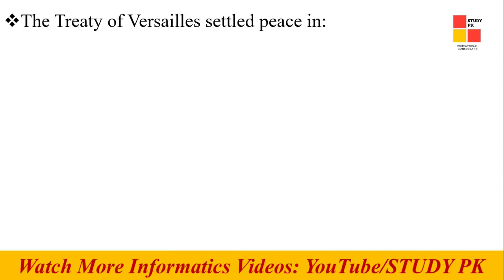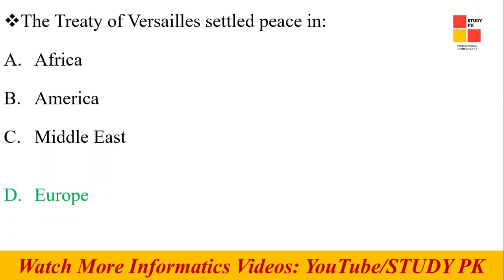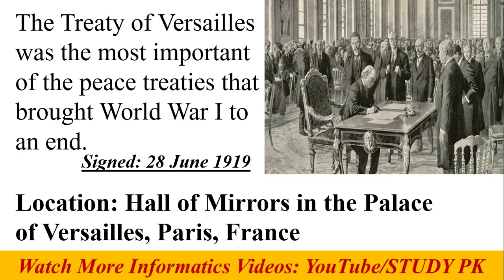Next question: The Treaty of Versailles is a peace treaty which was signed on 28th June 1919 to end World War I. It is located in the Hall of Mirrors in the Palace of Versailles in Paris, France, which is located in Europe.